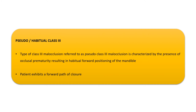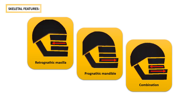These images show the skeletal features contributing to the development of Class 3 malocclusion. A retrognathic maxilla can predispose to Class 3, as can a prognathic mandible. A combination of both — retrognathic maxilla and prognathic mandible — can also lead to a Class 3 molar relationship.